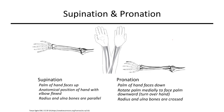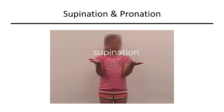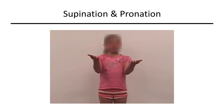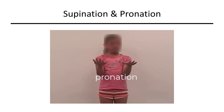Supination and pronation are specific to the hand. When you turn your palm to face upward or forward that is supination; when you turn your palm over that is pronation. We naturally hold our hands at our sides in a pronated position, then supinate when we want to turn our palm over to hold something. Here we see an example of supination and pronation.